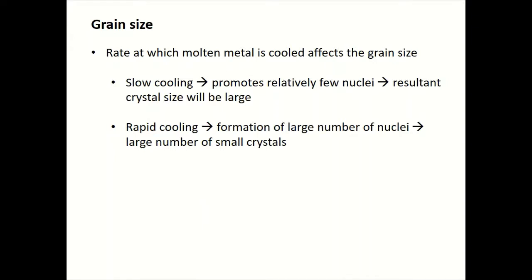There are methods to control the nucleation process and thereby the material properties. For example, adding a grain refiner, inoculant, or nucleating agent to the molten metal during solidification allows you to produce fine-grained structures, enabling you to tune the material properties. Grain size can also be controlled by thermo-mechanical treatments — a combination of deformation and thermal treatment.